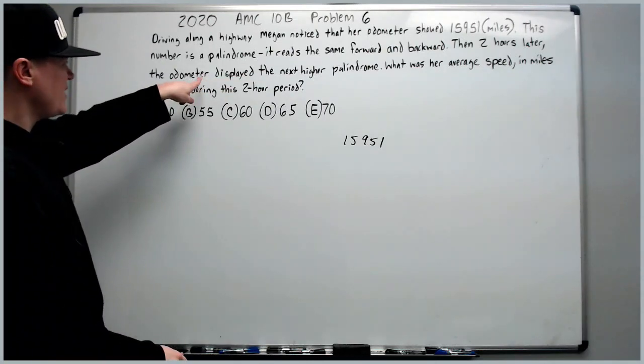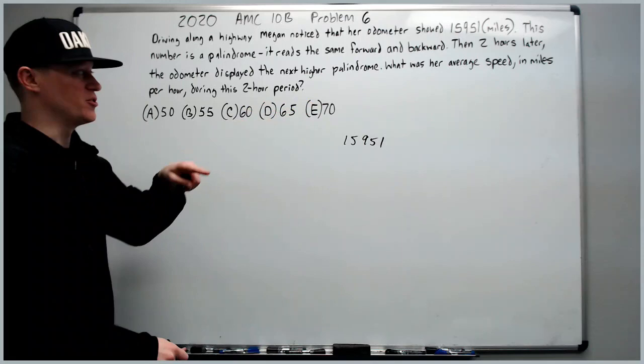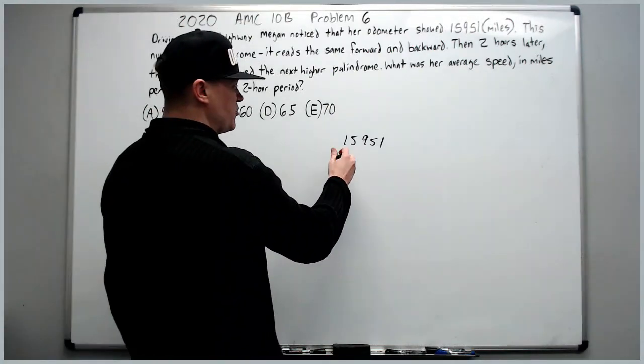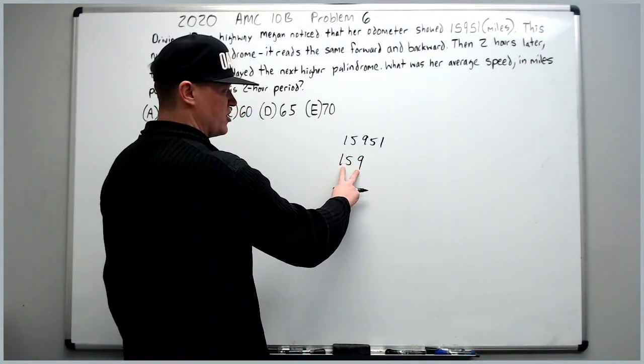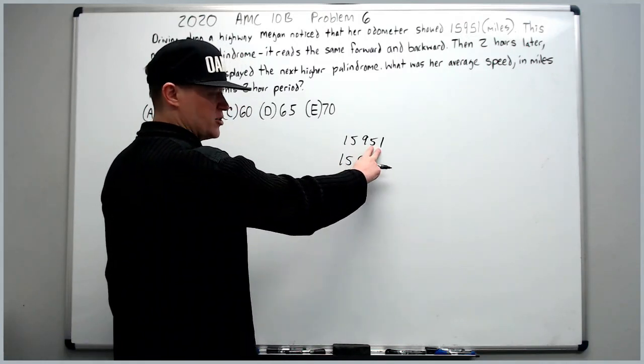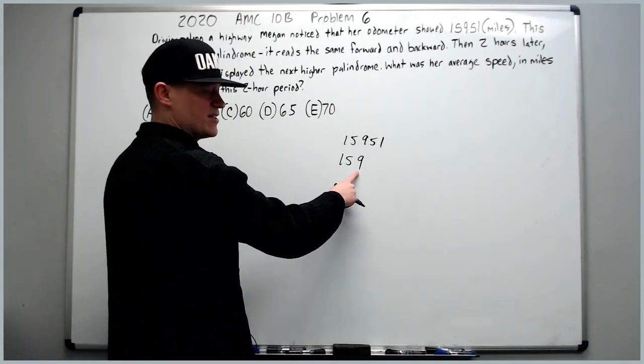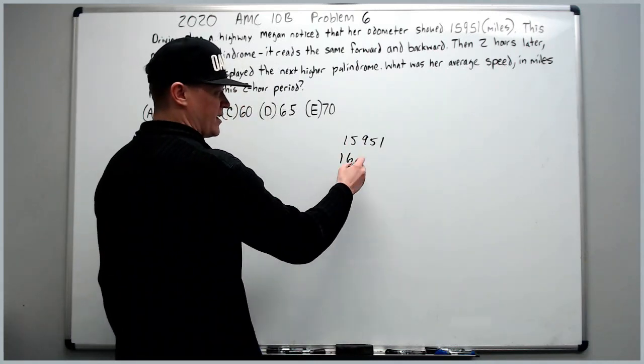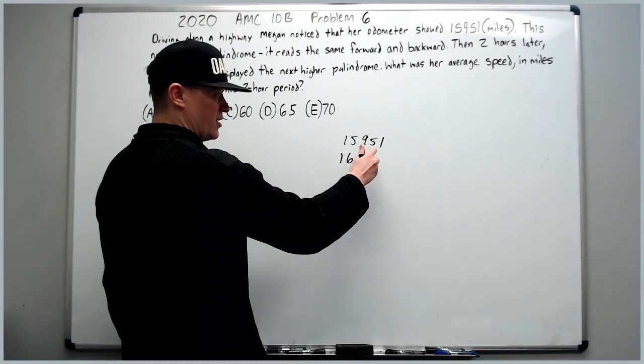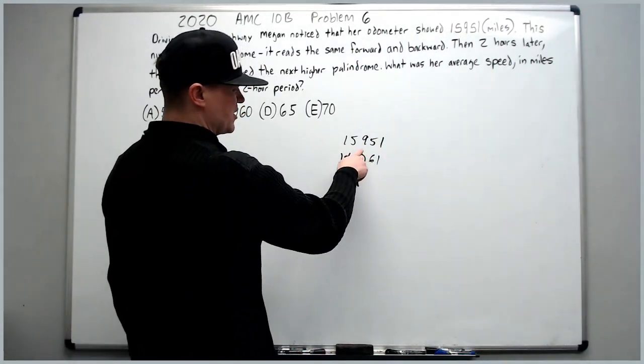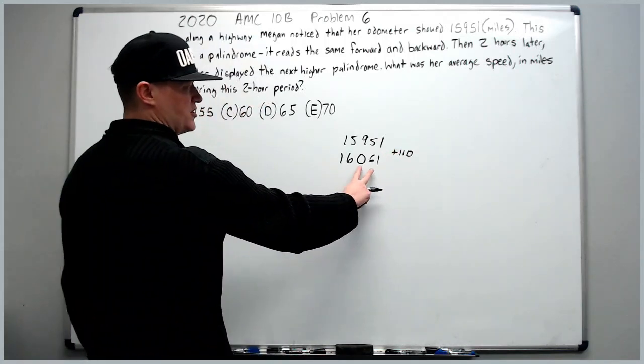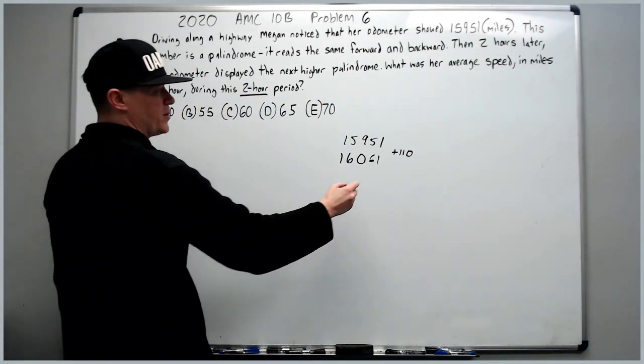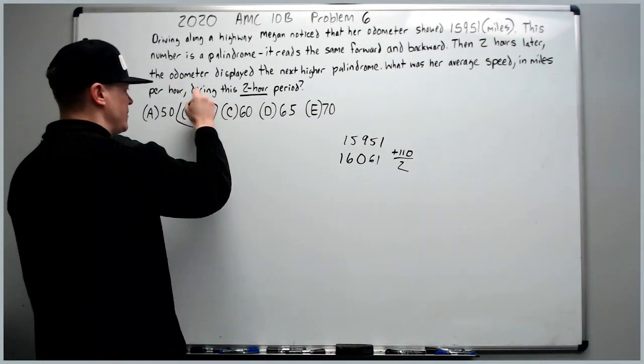Then two hours later the odometer displayed the next higher palindrome. What was her average speed? Okay, before we do that let's find the next higher palindrome. If you try to stick with 159, there's no way to get anything over here that matches these two without duplicating. So the 9 is going to have to go up by 1, which means it becomes 16,061. How far had she traveled? 110. What was her average speed in miles per hour during this two-hour period? Simply divide by two to get B, 55.